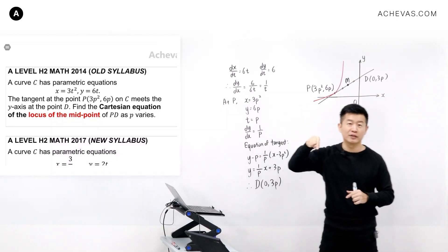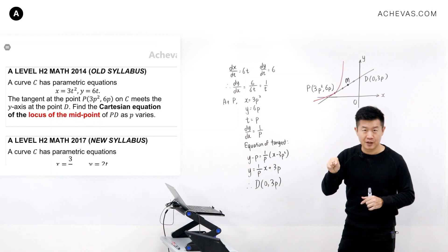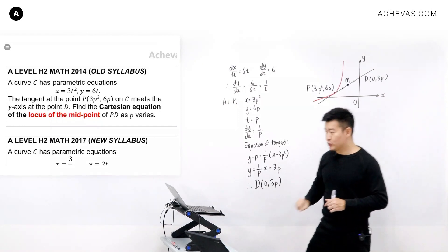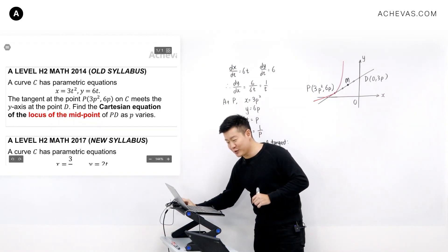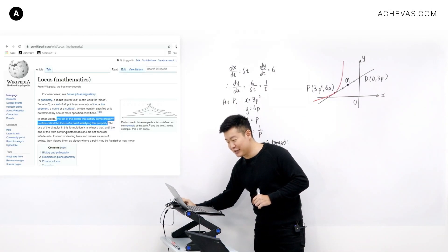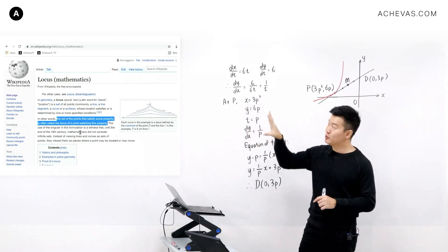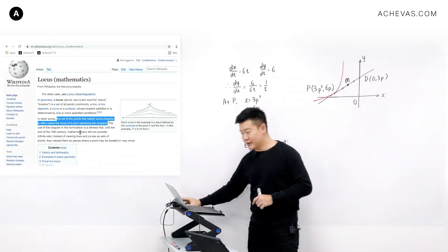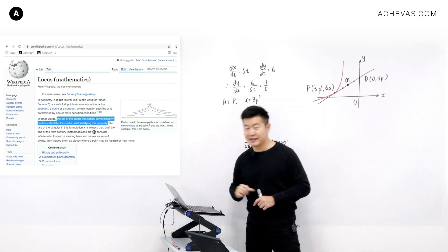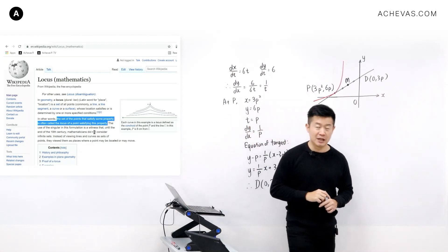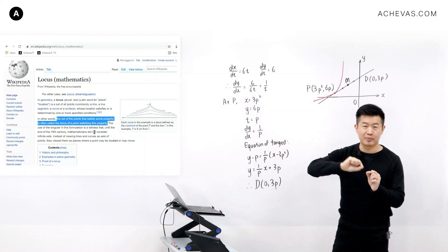That path is called the locus of the complex number. If you were to search Wikipedia — and I've done that — locus is defined as the set of points that satisfy some property.